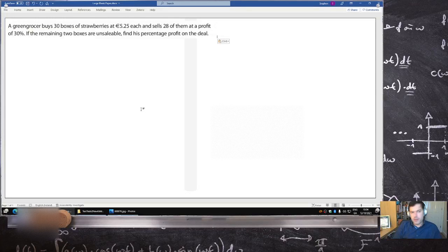Okay, let's have a look here. The greengrocer buys 30 boxes of strawberries at €5.25 each.